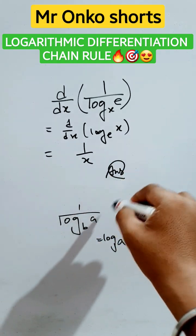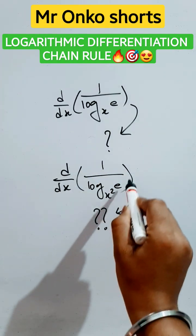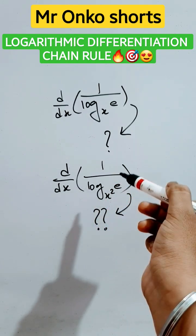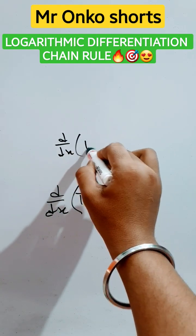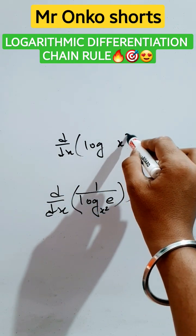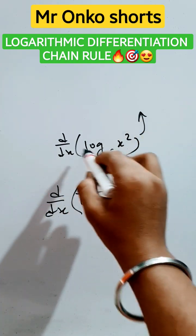Now for this logarithm differentiation, how to find this type of given question? This can be written as d/dx of logarithm of x squared to the base e. According to the logarithmic differentiation, it will be 1 by x squared.